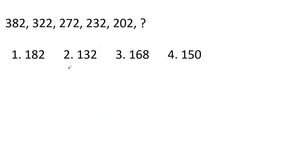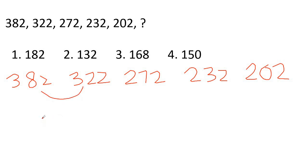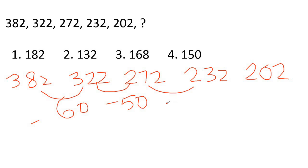First question: 382, 322, 272, 232, 202. Let's look at the differences. 382 to 322 is 60. 322 to 272 is 50. 272 to 232 is 40. 232 to 202 is 30. The differences are decreasing.